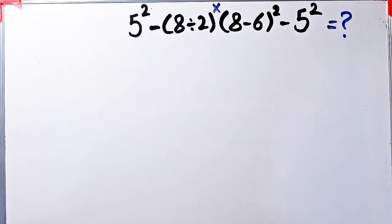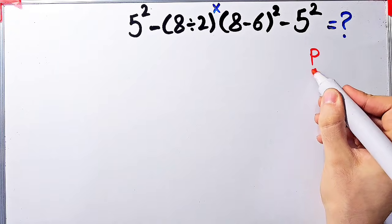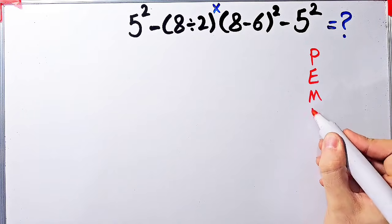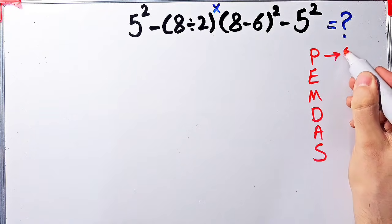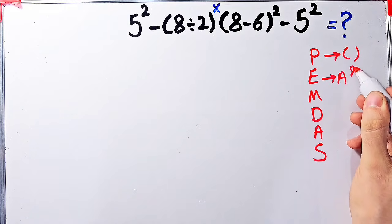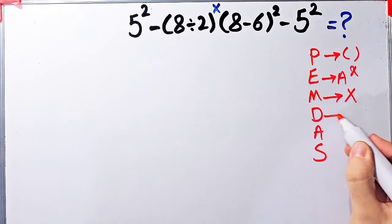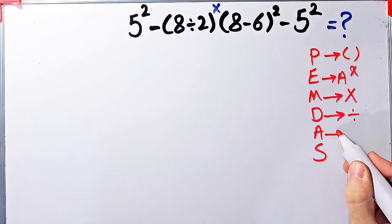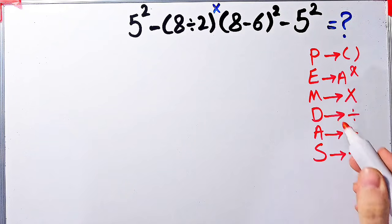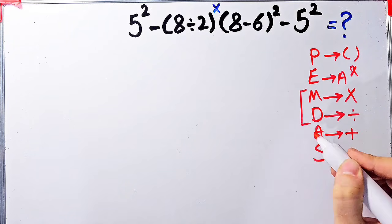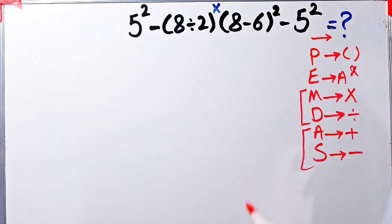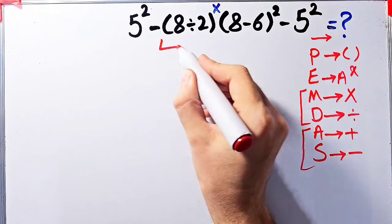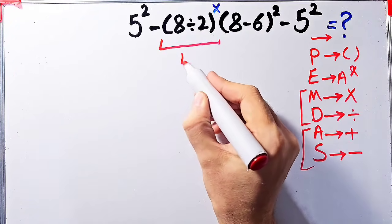Let's solve this question step by step together. Again, to solve this question we need to follow the PEMDAS rule. If you don't pay attention to this rule, you get the wrong answer. P stands for parenthesis, E stands for exponent, M stands for multiplication, D stands for division, A stands for addition, and S stands for subtraction. Multiplication and division have the same level of priority; also addition and subtraction have the same level of priority, and when we have both in an expression we start from the left. According to this rule, first we simplify the parenthesis: eight divided by two equals four.